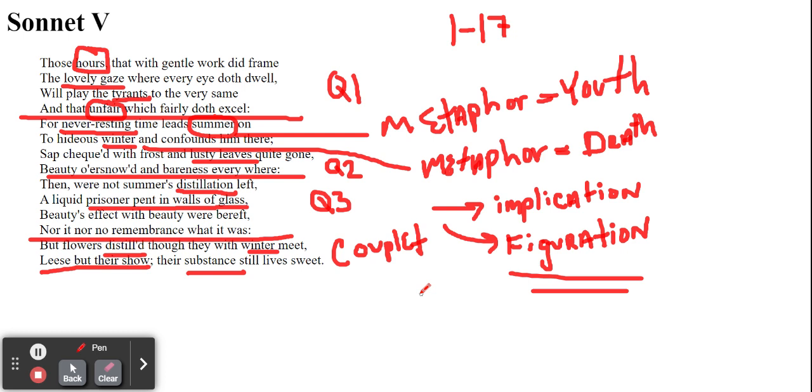Dealing with the extraction of perfumes from flowers, and this implication here is once again dealing with the speaker. And the only way that his beauty will live on forever is if he has a child. And the child, in essence, would be the beauty that's extracted and that's going to live on.